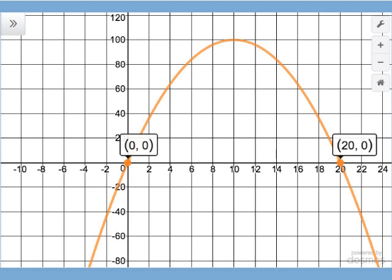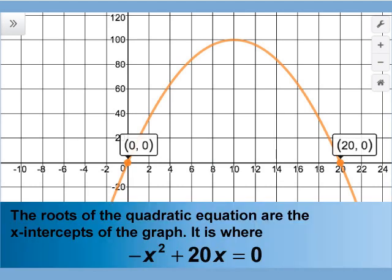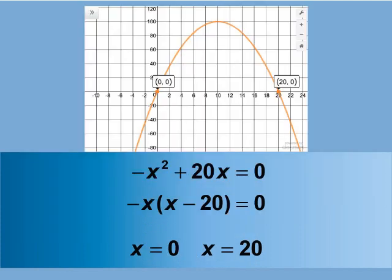Here are the labeled points. The roots of the quadratic equation are the x-intercepts. It is where negative x squared plus 20x equals zero. So the roots of the equation are x equals zero and x equals 20. This means that the rocket hits the ground after 20 seconds have elapsed.